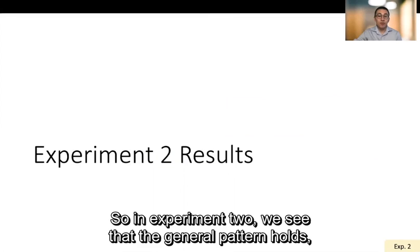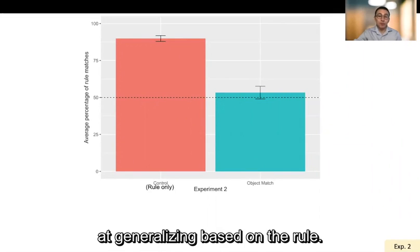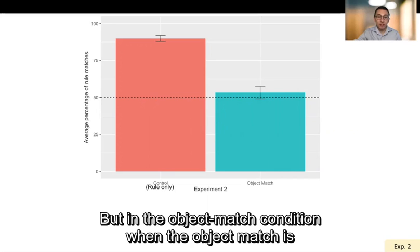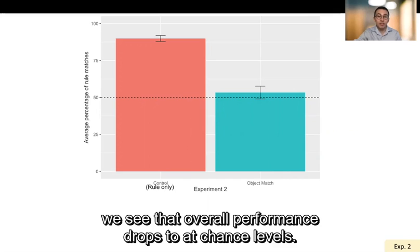So in experiment two, we see that the general pattern holds, where in the rule only condition, adults are successful at generalizing based on the rule. But in the object match condition, when the object match is also a viable generalization strategy, we see that overall performance drops to at-chance levels.